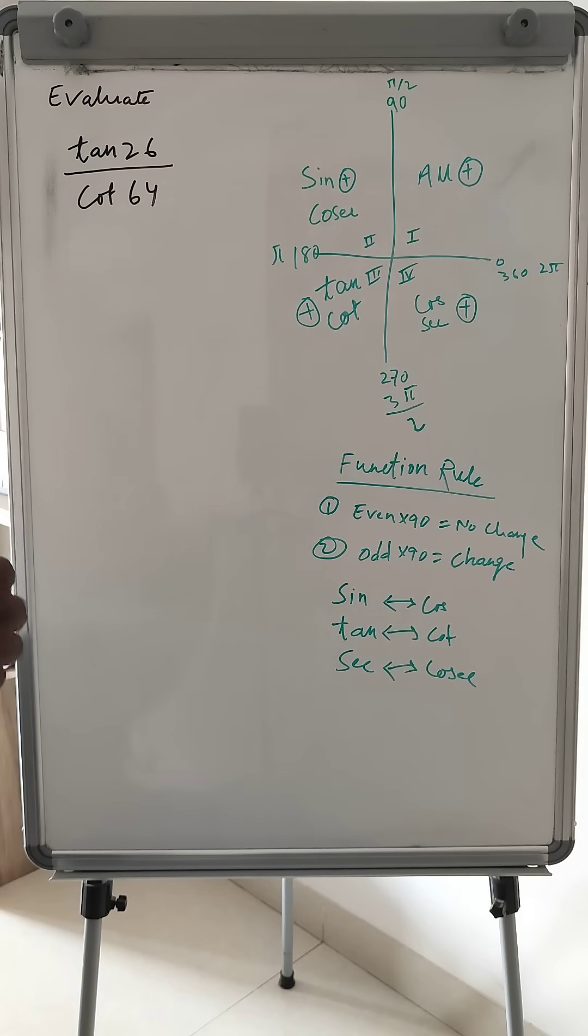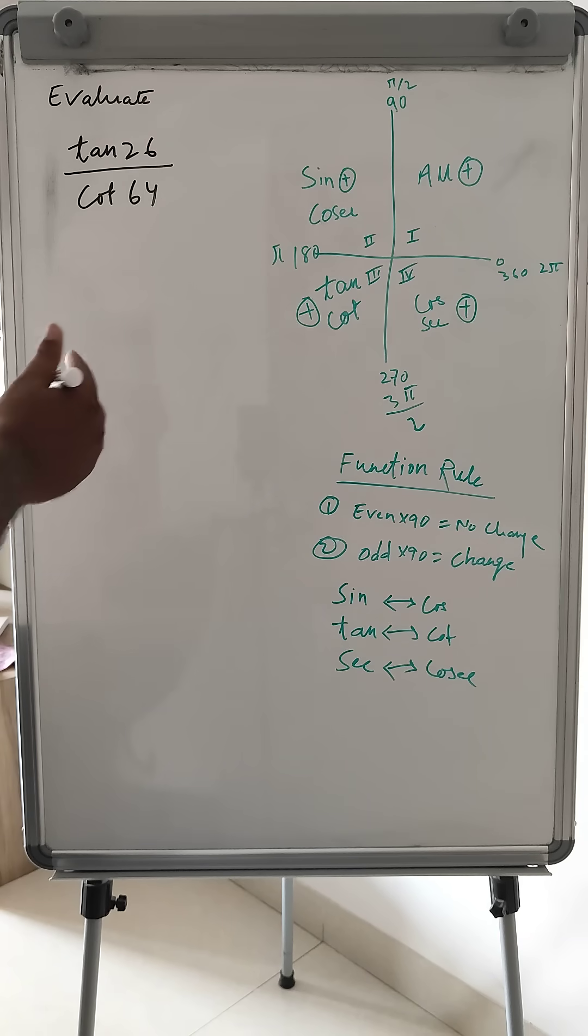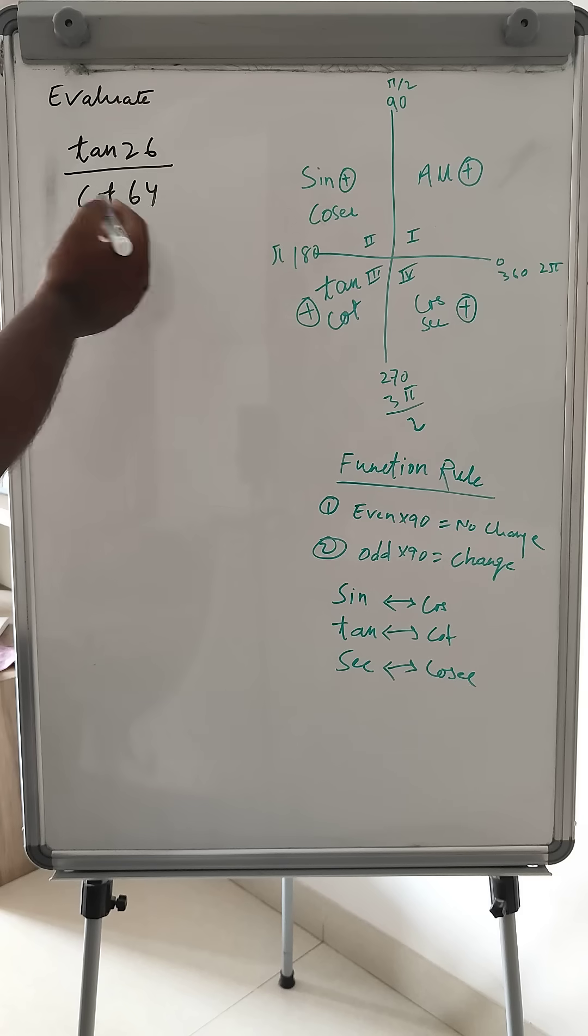Hi everyone, today we have another problem in trigonometry which is related to the trigonometric quadrant. The problem is tan 26 divided by cot 64.